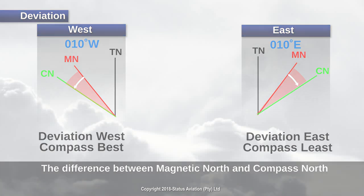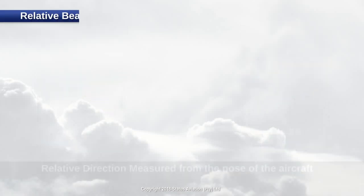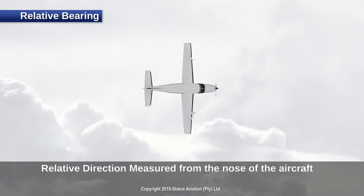Finally, we will look at relative bearing. The relative bearing of an aircraft is the clockwise angle in degrees from the heading of the aircraft to a straight line drawn from the aircraft to another object. Relative bearing is always measured from the nose of the aircraft, with the nose being at 000 or 360 degrees. The true, magnetic, or compass bearing may be found by adding the true, magnetic, or compass heading to the relative bearing.